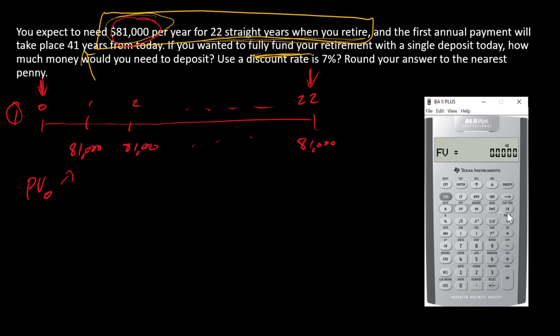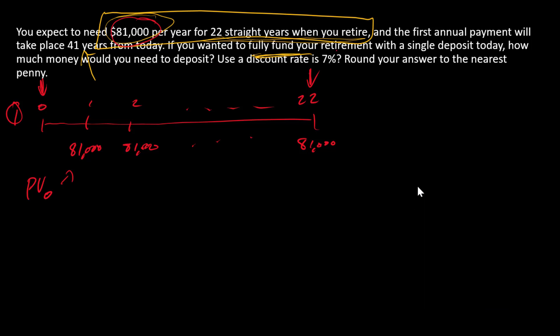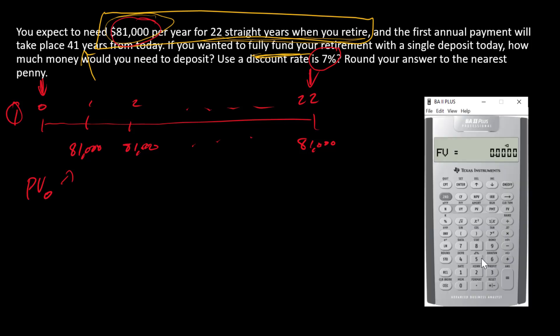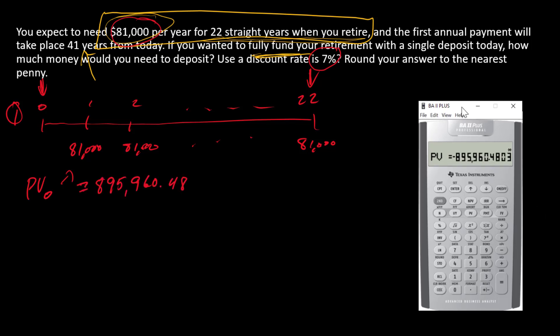Let's look for a discount rate. The discount rate is 7%, so I'll put seven in for I, and then there are 22 payments, so 22 goes into N. I can compute PV and I'll get this number: $895,960.48. This is what we'll need at retirement. That is step one.